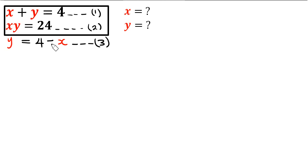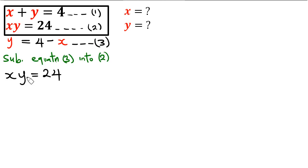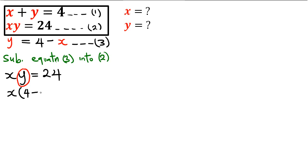Now what we're going to do is substitute equation 3 into equation 2. Equation 2 is xy equals 24. We're going to substitute equation 3 — instead of writing y, we're going to put 4 minus x there. So we have x into bracket (4 minus x) equals 24. We just substituted 4 minus x as the value of y.